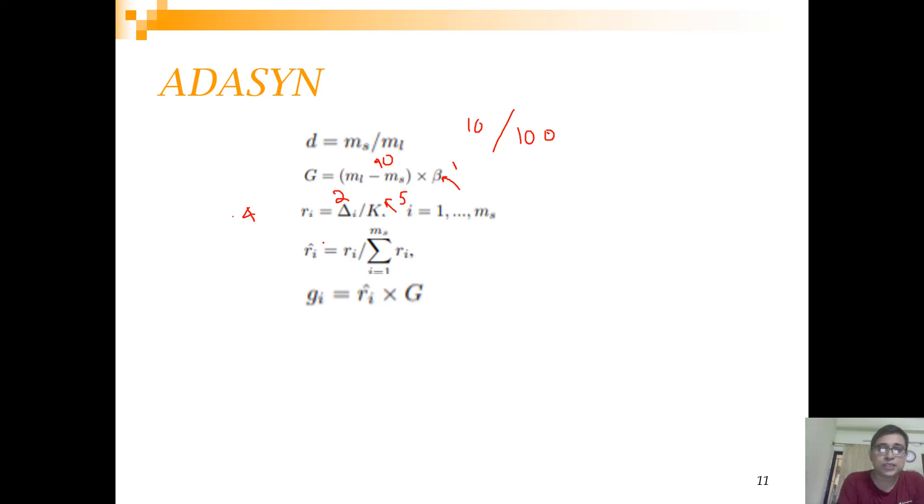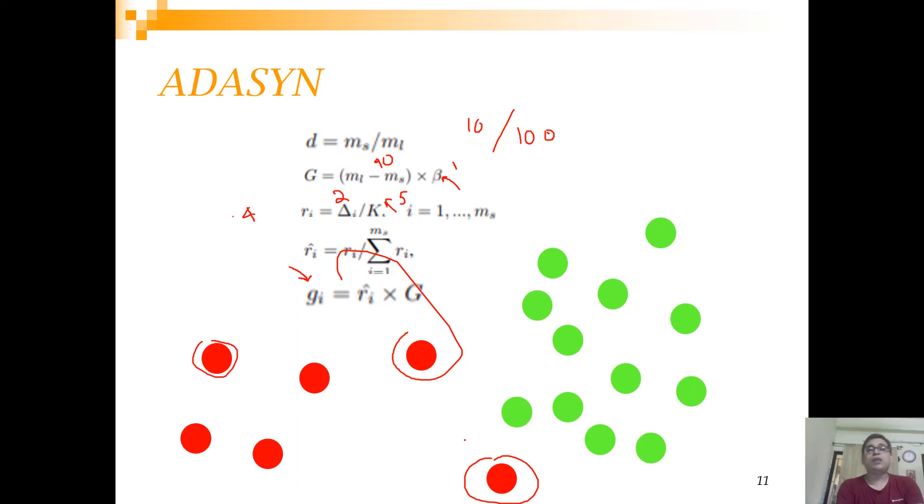Then what you are going to do is that you are determining for each of the individual points how many synthetic observations can be generated. What is the meaning of that? If we look at this data, you can understand that this will have high r_i, this will have moderate r_i, and this will have low r_i. So more synthetic observations will be generated for this, followed by this, followed by this. That's why it is called adaptive synthetic generation.